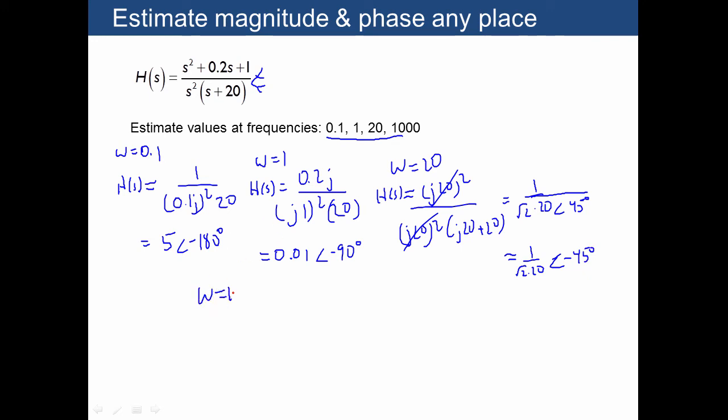Finally, let's plug in a very large number of 1,000. When you plug in 1,000, you get j times 1,000 squared, which swamps out any other terms. We also have j times 1,000 squared in the denominator here. And j times 1,000 plus 20 is approximately j times 1,000. These all cancel, so we end up with 1 over j times 1,000, or 0.001 with an angle of negative 90 degrees.